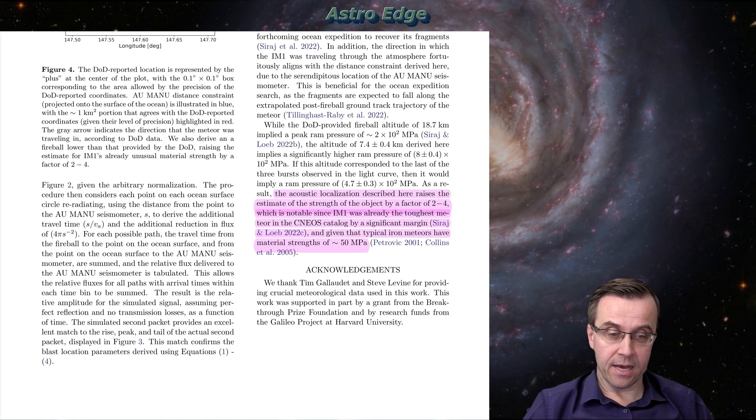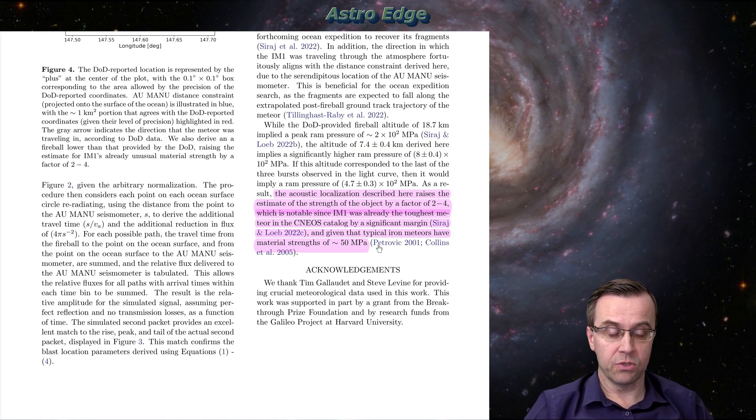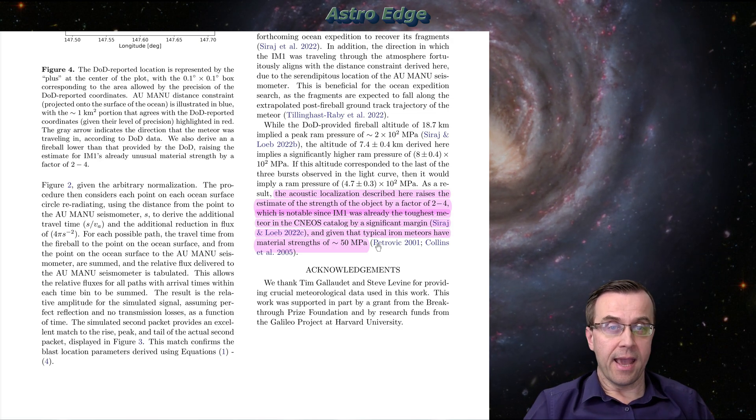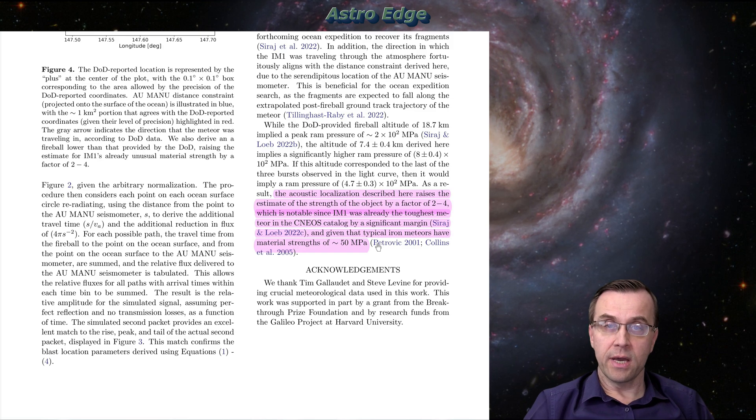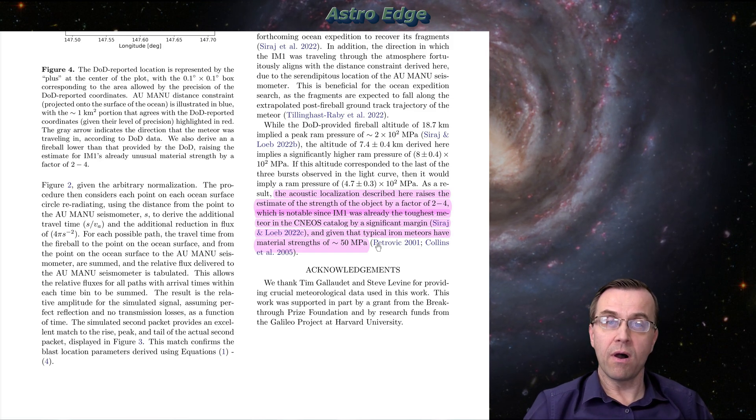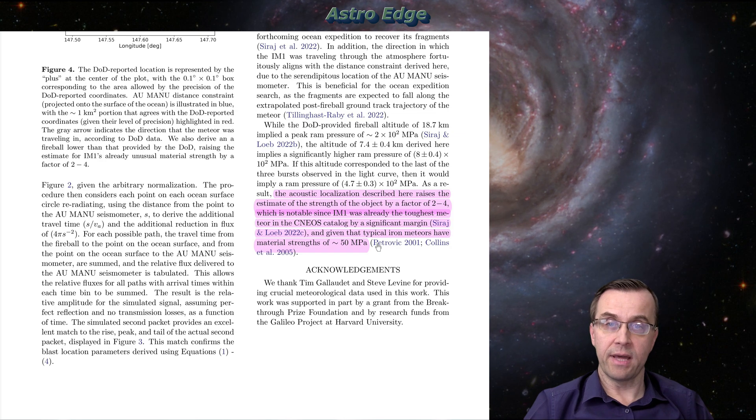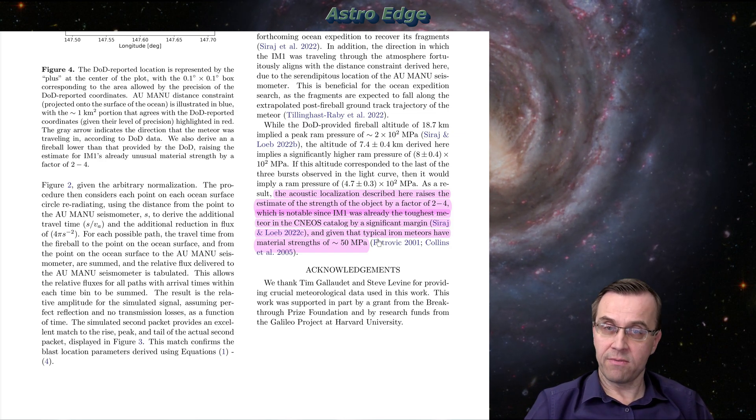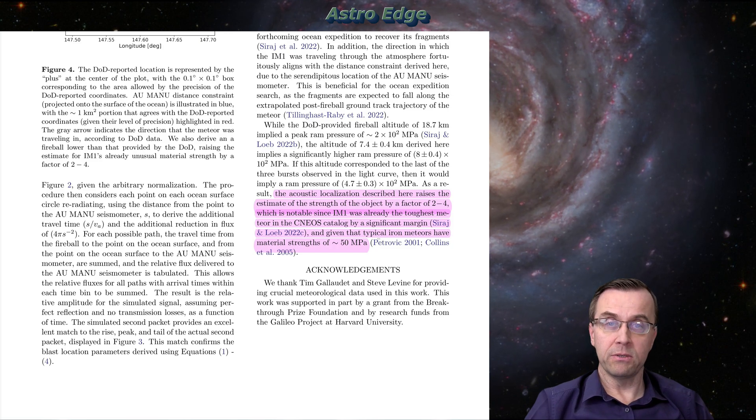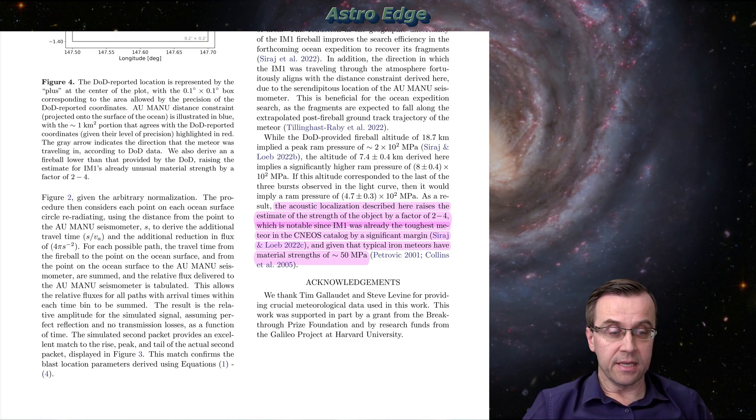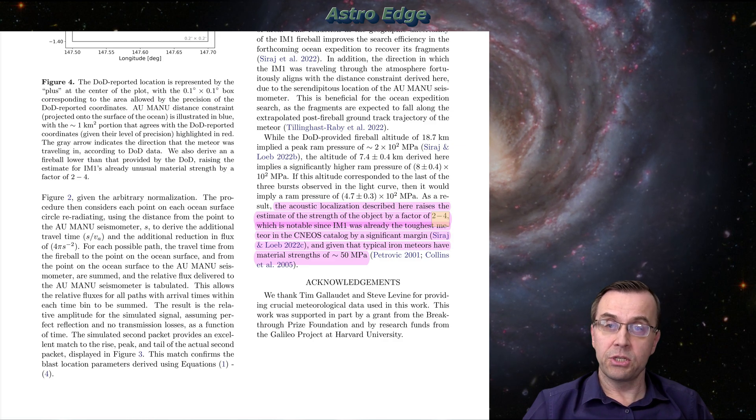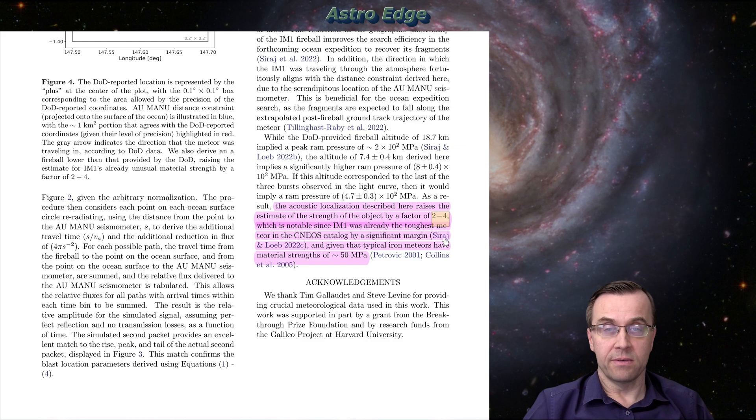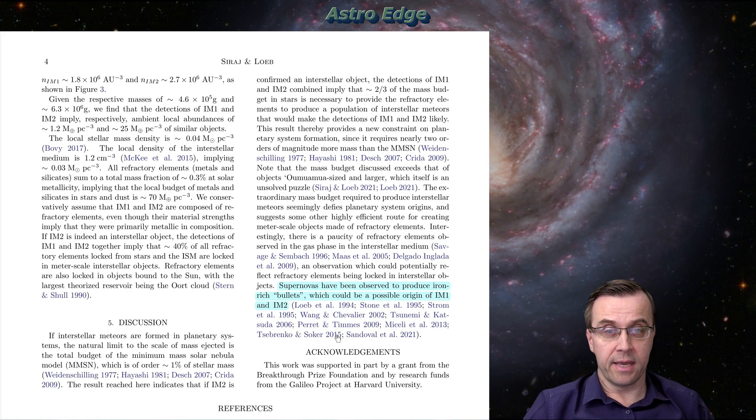But there was also another interesting outcome of this research. Their model allowed them to calculate the strength of the meteor and the way one can do that by estimating how far meteor can travel into the thick layers of the atmosphere before it explodes, falls apart. The longer it can travel, the stronger material it's built from. The very interesting result here is the strength of this interstellar meteor is much higher than strength of normal solar system meteors. Why would it be the case?